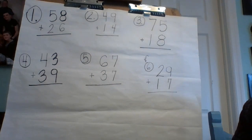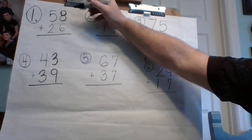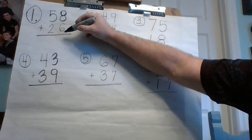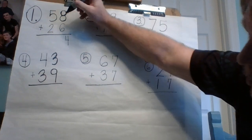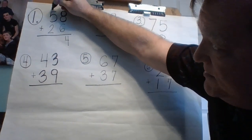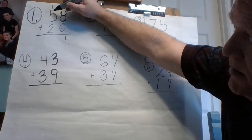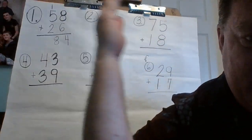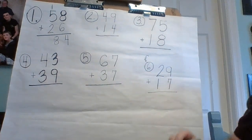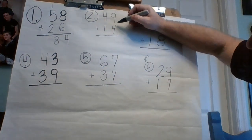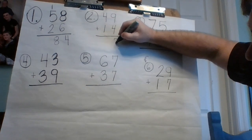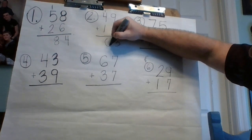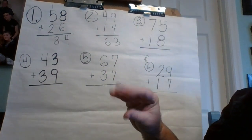We're going to add the ones first. Eight plus six is 14 — I put the four with the other ones and put the one up top with the other tens. Five plus one is six, plus two more is seven, eight — so number one is 84. If you got 84, pat yourself on the shoulder, great job! Number two: nine plus four is thirteen — the three goes here, the ten goes with the other tens. Four plus one is five, plus one more is six — number two is 63. Give yourself baby claps!